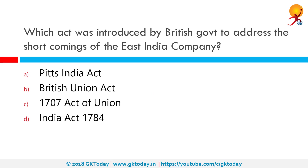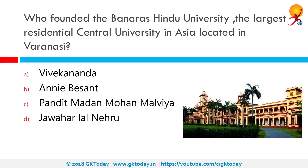Which act was introduced by the British government to address the shortcomings of the East India Company? Pitt's India Act 1784, or the East India Company Act 1784, was passed in the British Parliament to rectify the defects of the Regulating Act of 1773. It resulted in dual control or joint government in India by the Crown of Great Britain and the British East India Company, with the Crown having ultimate authority.